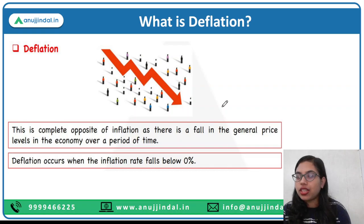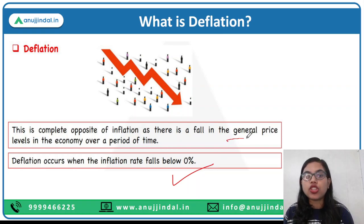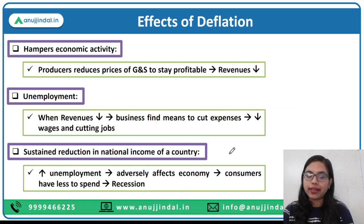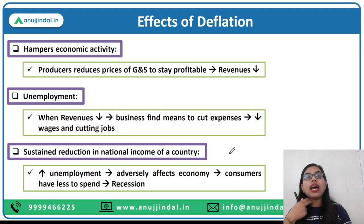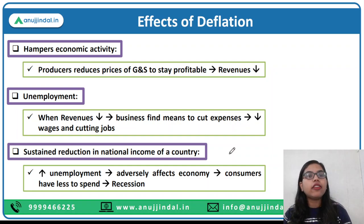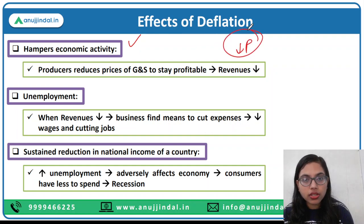This is just an example for you to connect with global developments. Now deflation — as I have already told you — is when inflation goes below zero percent, referring to a general fall in the prices of goods and services in the economy over a period of time. What are the effects associated with deflation? I have already talked about it, and here it is presented in a clear form.